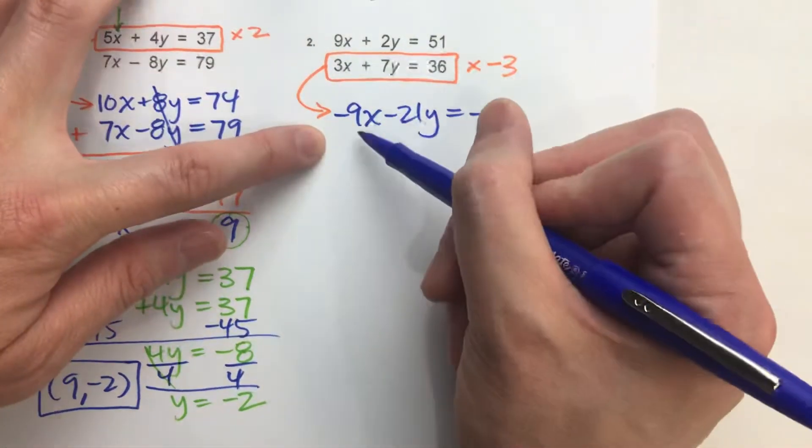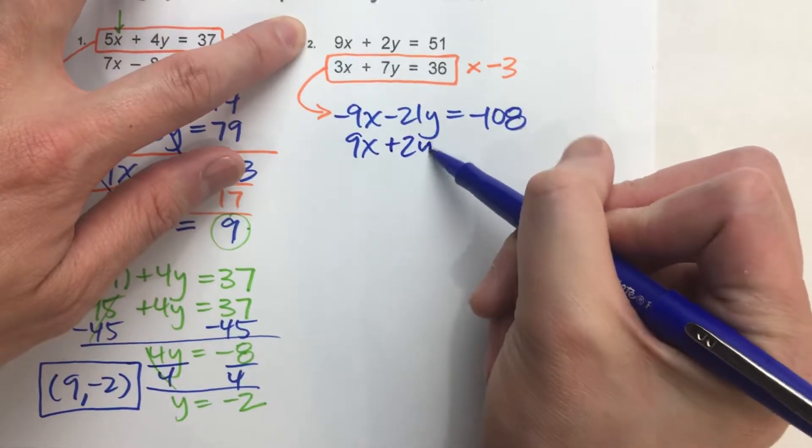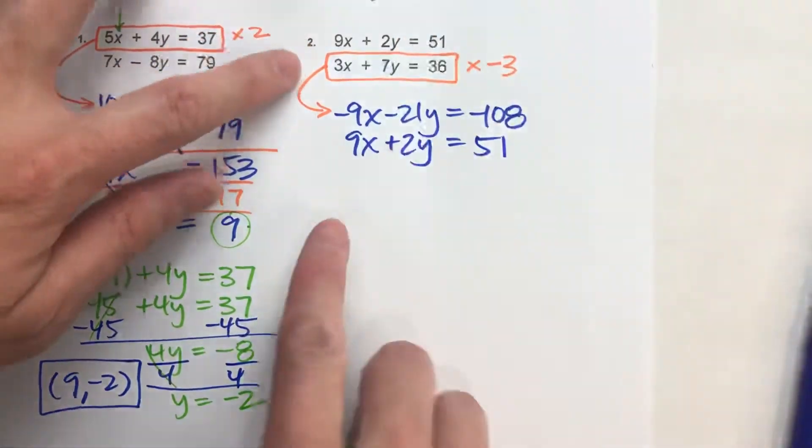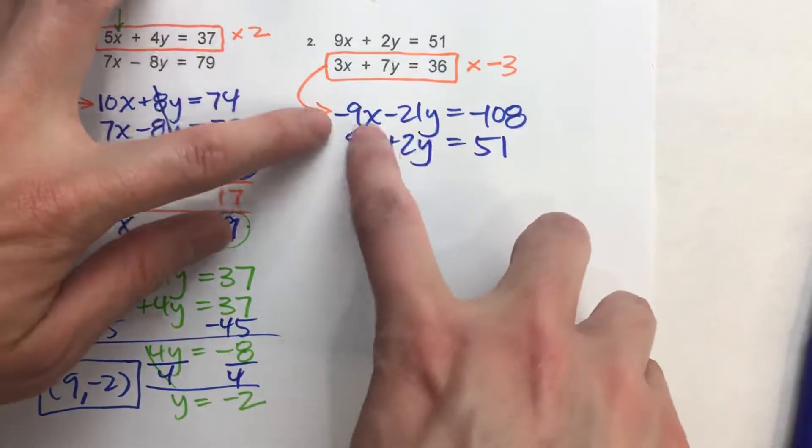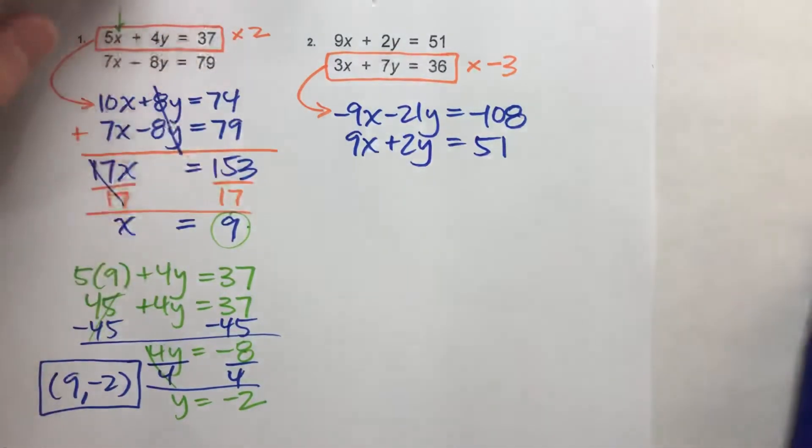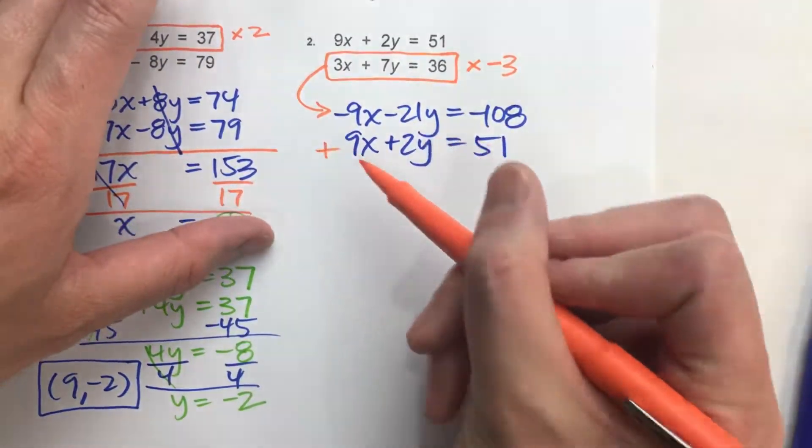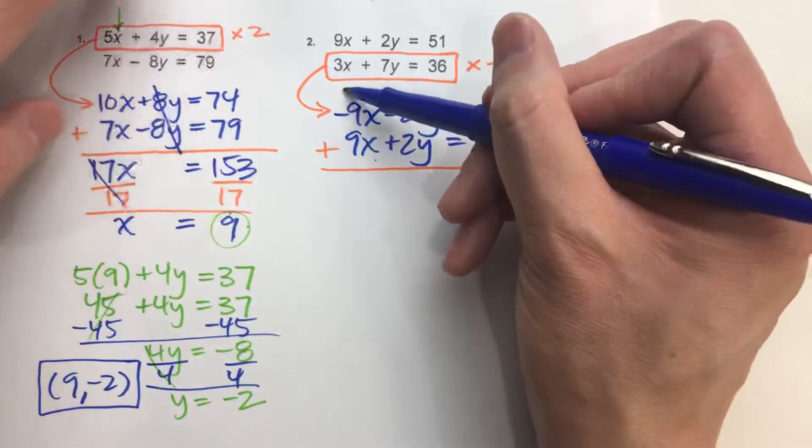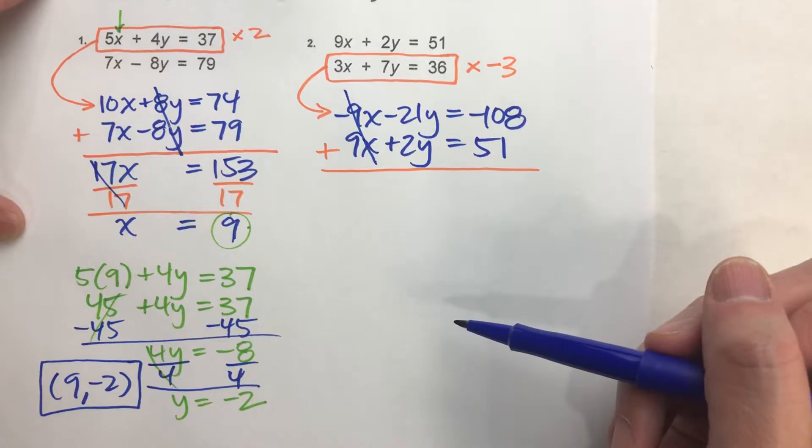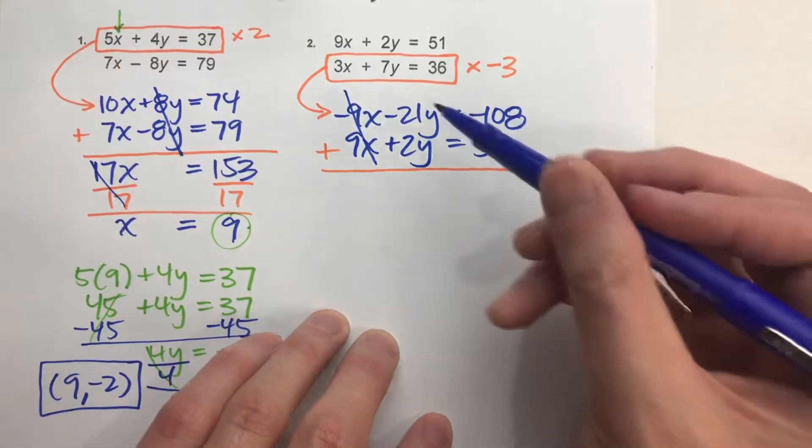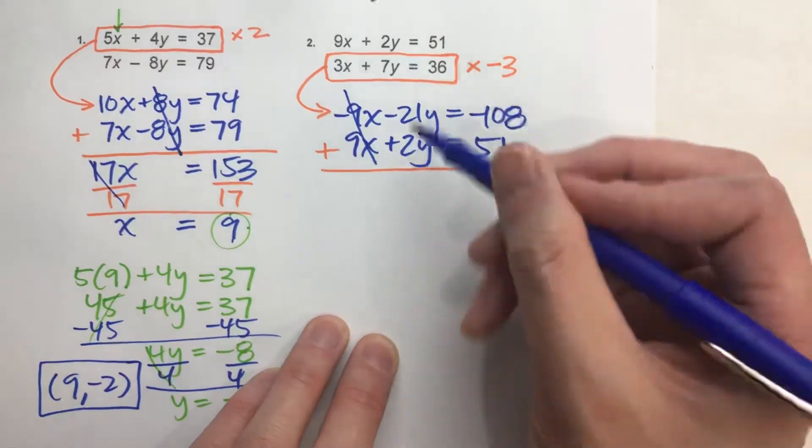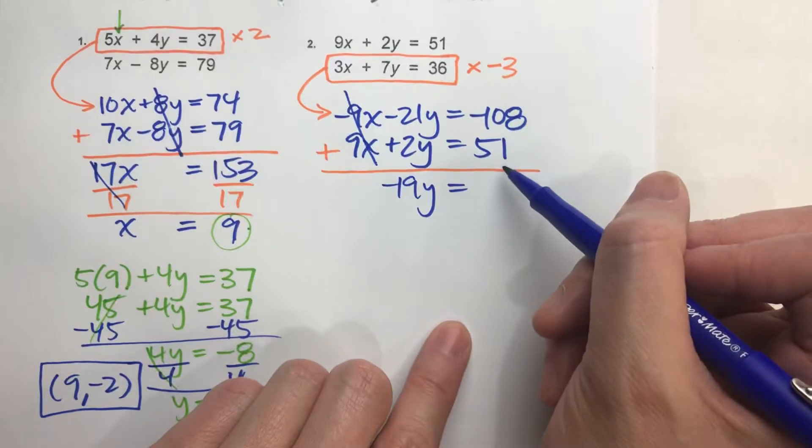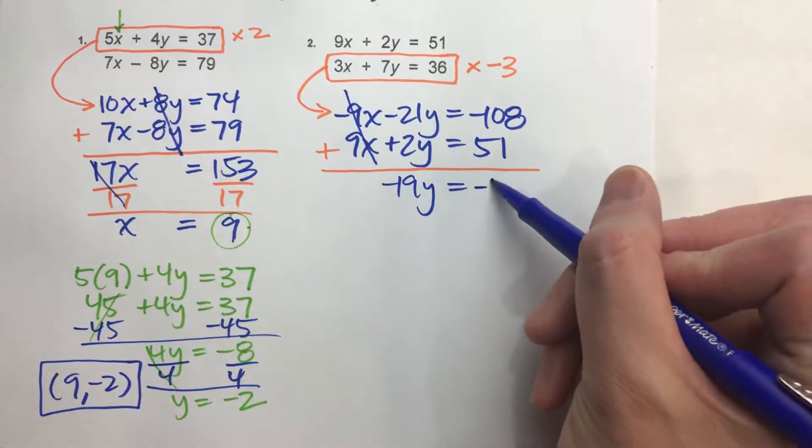Now, I'll just take my other equation and just drop it down. And now you can see why I chose to multiply by negative 3. I've got a negative 9x now. And I already had a positive 9x. So when I add these two equations together, negative 9x's plus positive 9x's eliminates all my x's. And now I can solve this pretty easily. Negative 21y plus 2y is negative 19y. And negative 108 plus 51 is negative 57.